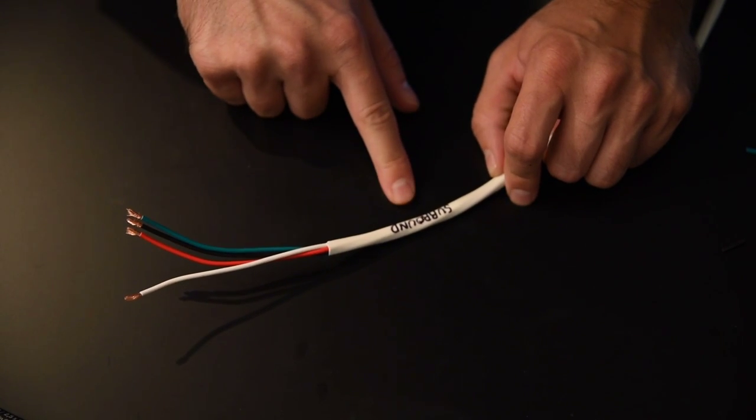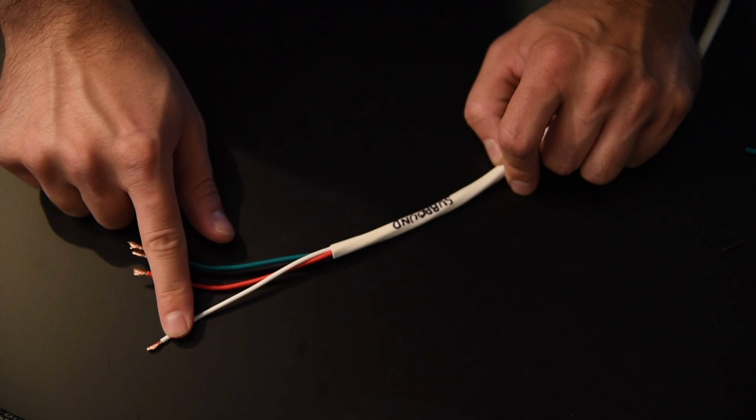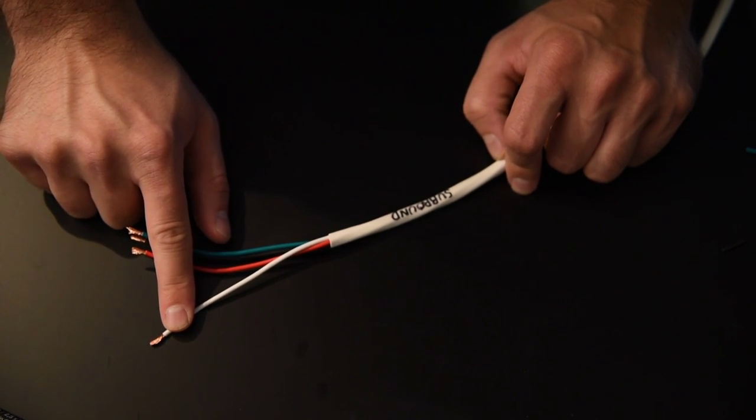So I want to go ahead and do the same thing for the other cables as well. So I'm just going to go ahead and label them surround. On one side, I'm going to strip just about a half inch off the end of the cable.